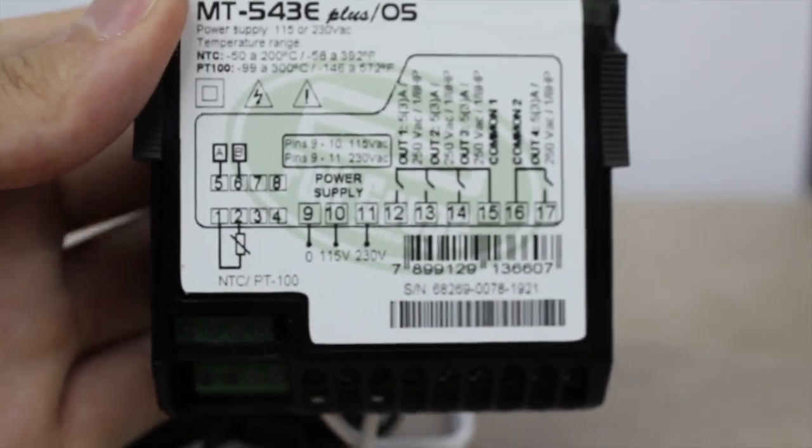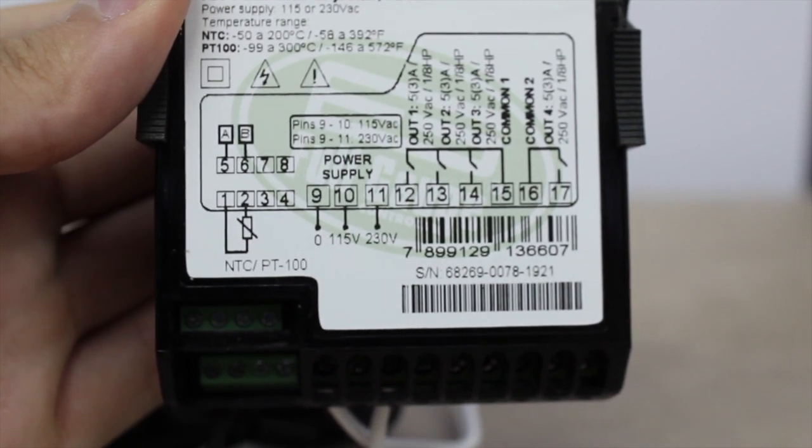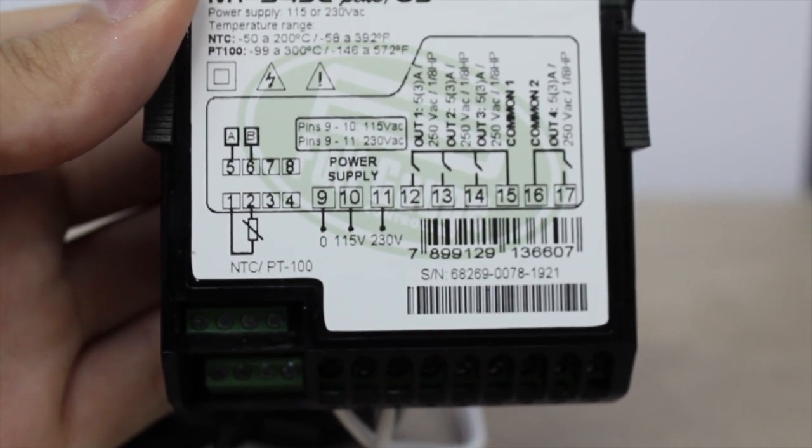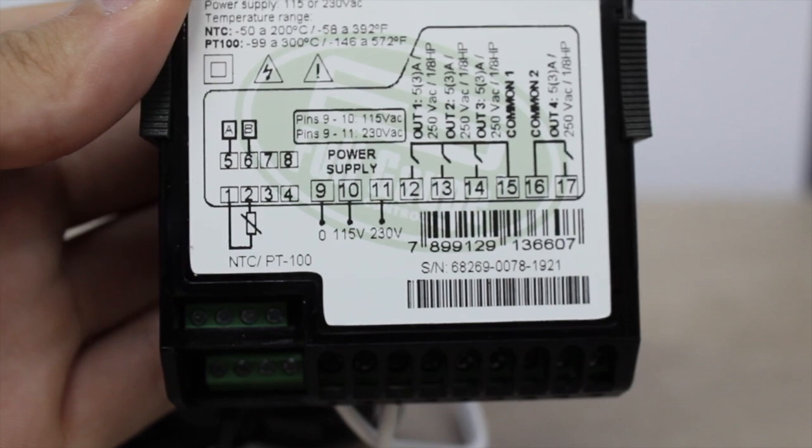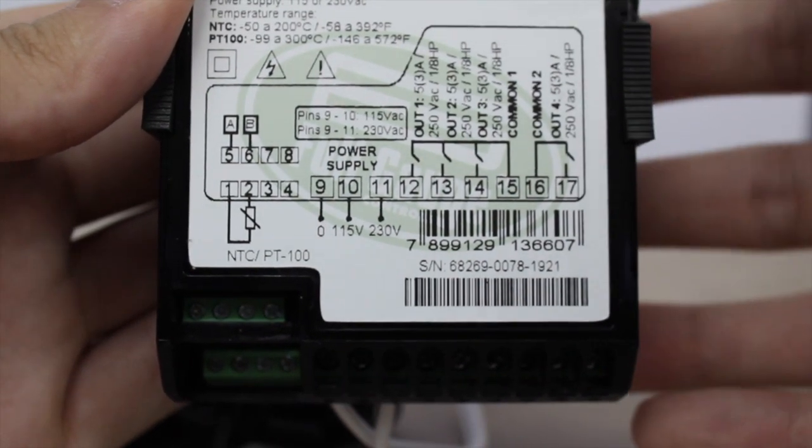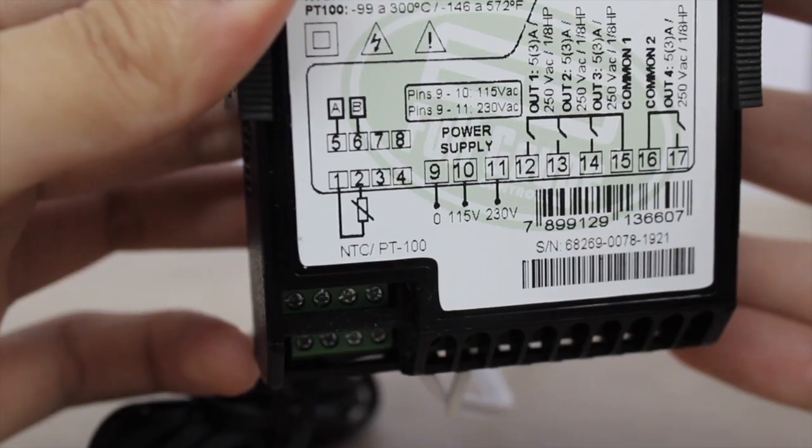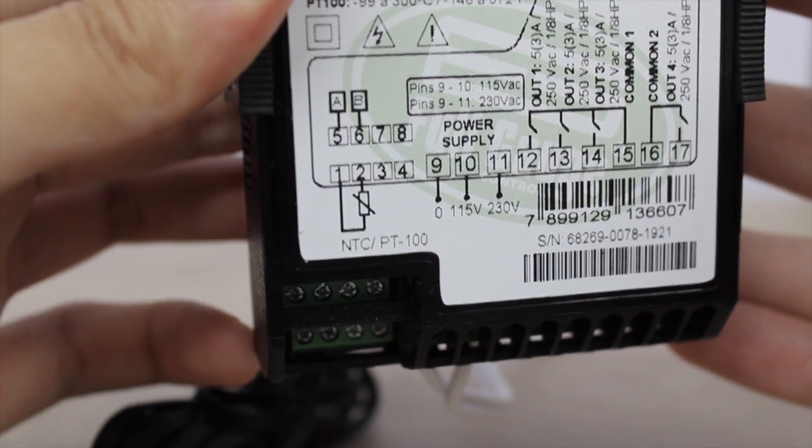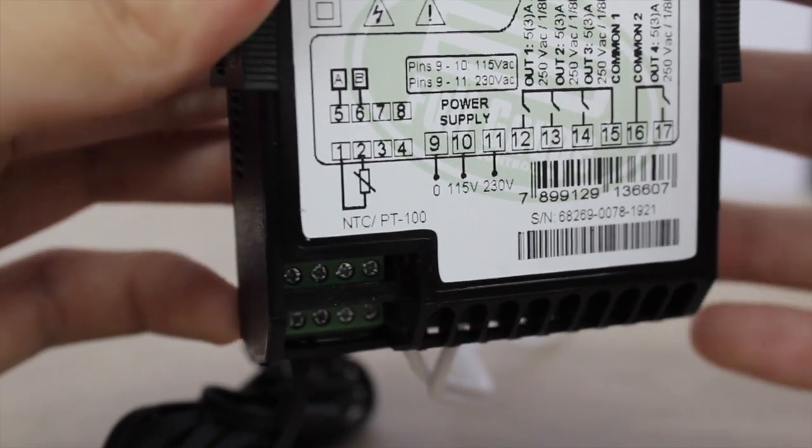The MT543E+ can be connected to Citrad, a low cost management software provided by Full Gauge Controls for the company's equipment. Using Citrad, it's possible to configure remotely using a smartphone or a computer.